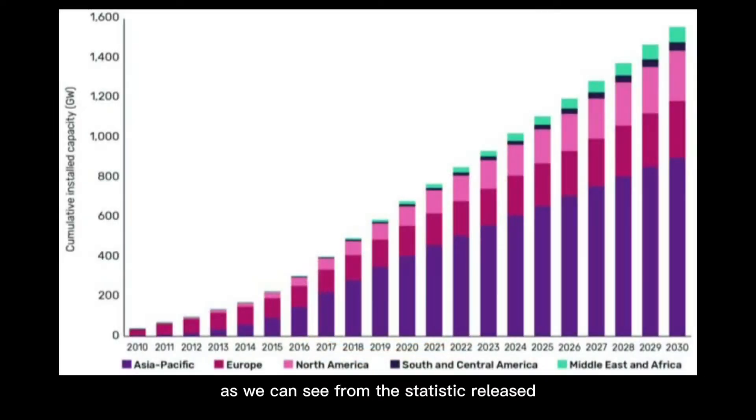As we can see from the statistics released by the Global Data Power Intelligence Center, the cumulative global solar photovoltaic installed capacity by region has increased since the year 2010 and is expected to increase further until the year 2030.